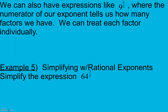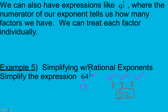We can also have expressions like 9 to the 3/2 power, where the numerator of our exponent tells us how many factors we have — we treat each factor individually. For 64 to the 3/2 power, we're looking for things that multiply to 64 in groups of 2. 64 is 8 times 8, so this is like saying 64 to the 1/2 times 64 to the 1/2 times 64 to the 1/2 — adding those exponents gives us 3/2. Since 64 to the 1/2 is 8, we get 8 cubed, which equals 512.